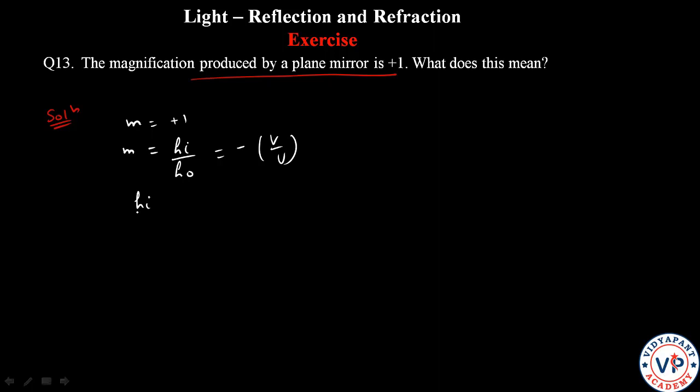If m value is 1, height of image upon height of object is 1, so height of image is equal to height of object.